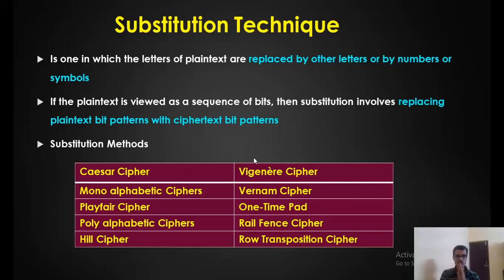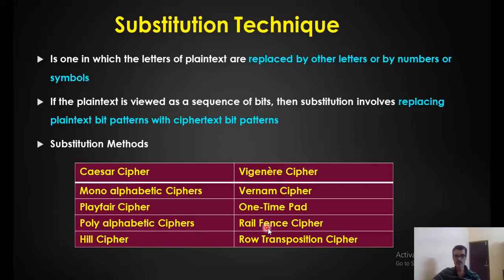There are different types of substitution methods. The first one is Caesar Cipher. The second one is mono-alphabetic cipher. The third one is Playfair cipher. The fourth one is poly-alphabetic cipher. Hill cipher is a very important one. Vigenère cipher, Vernam cipher, OTP — that is one-time pad — and rail fence cipher and row transposition cipher.